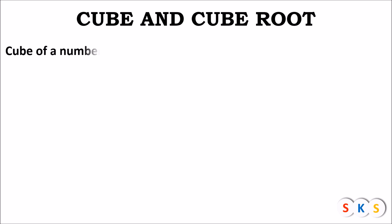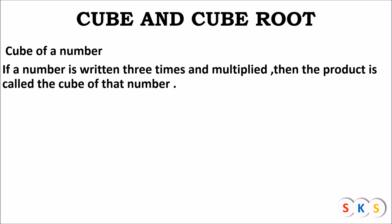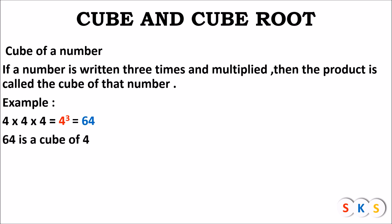Cube and cube root: What do you mean by cube of a number? If a number is written three times and multiplied, the product is called the cube of that number. For example, 4 into 4 into 4, written as 4 raised to 3, equals 64. So 64 is the cube of 4, and 4 is the cube root of 64.